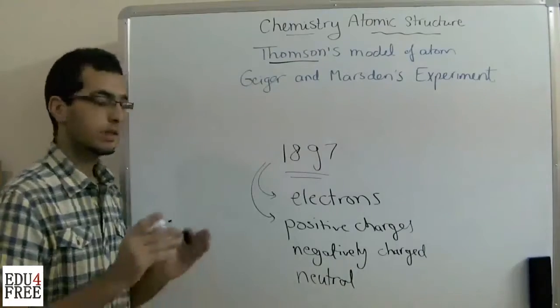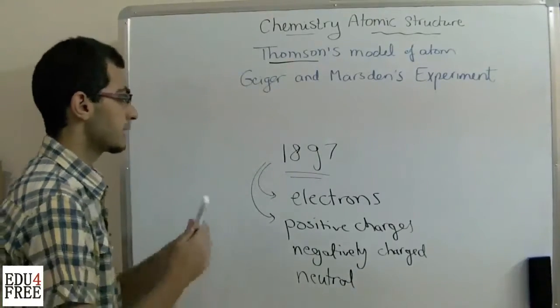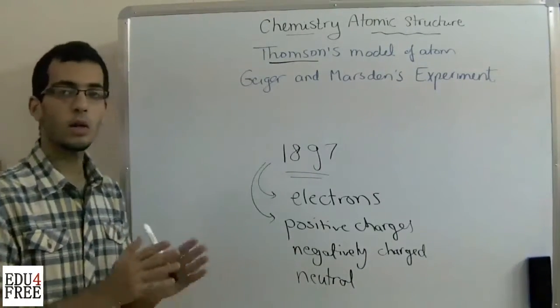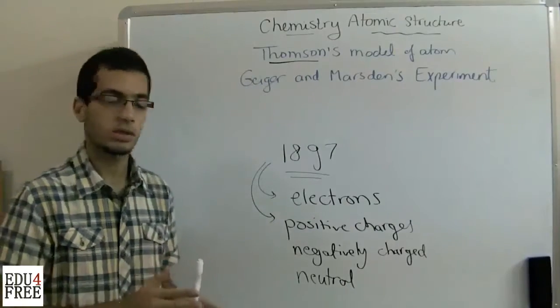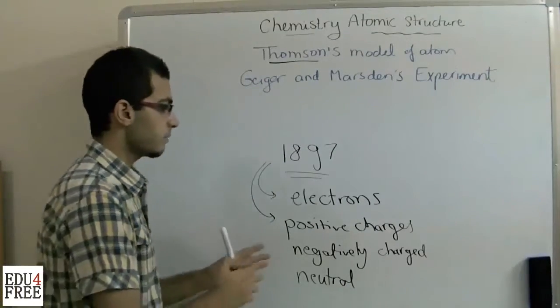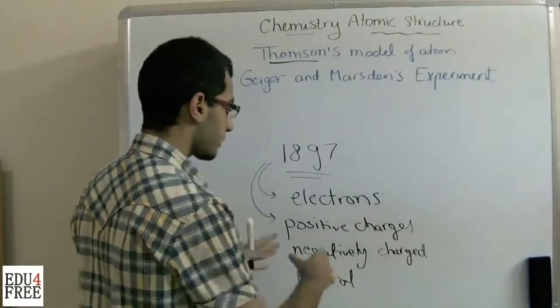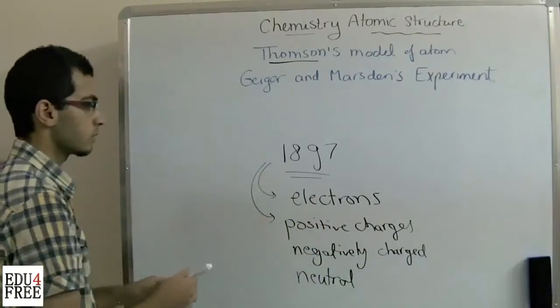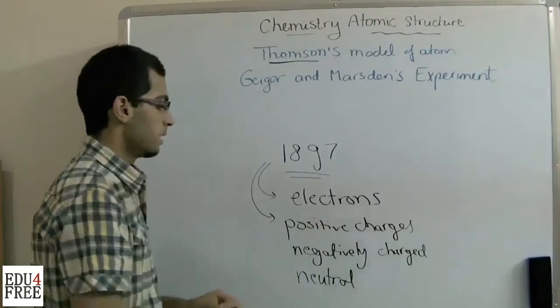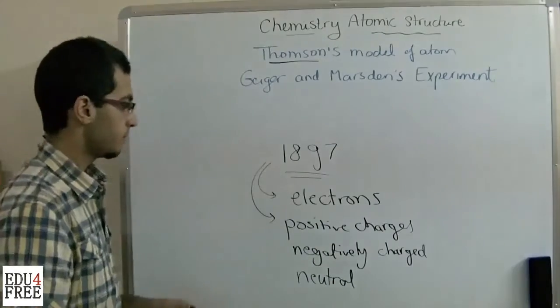The atom is neutrally charged. So he said that the atom is a sphere of uniform positive charges which contain some negatively charged particles, which are the electrons, that make this atom neutral.